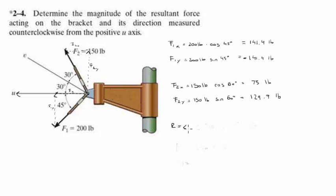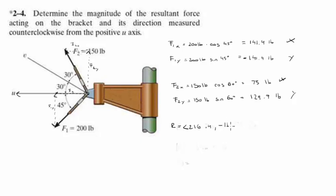R would be equal to: the x component would be 141.4 plus 75, for a grand total of 216.4. And the y component would be negative 141.4 plus 129.9, which would be negative 11.5.